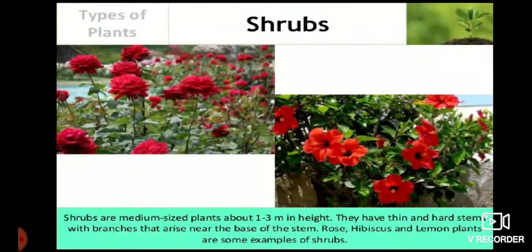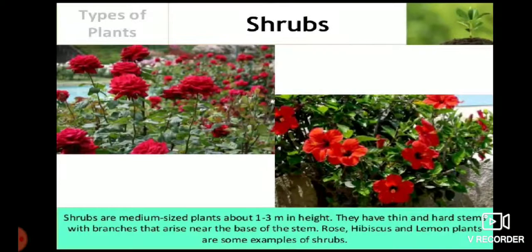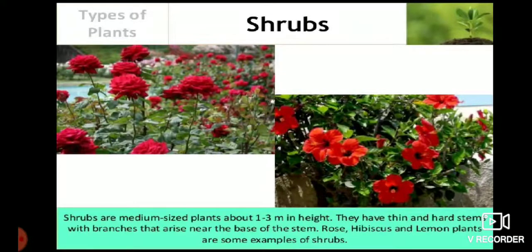Shrubs are medium-sized plants about one to three meters in height. They have thin and hard stems with branches that arise near the base of the stem. Rose, hibiscus, and lemon plants are examples of shrubs.